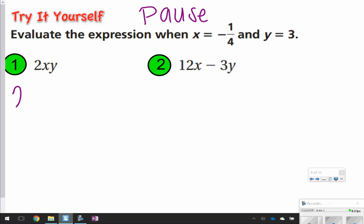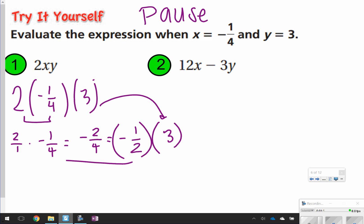We got 2xy, so that's 2 times negative 1 fourth times 3. I'm going to do 2 times negative 1 fourth. That's like saying 2 over 1 times negative 1 over 4. And I'm going to get negative 2 fourths, which is equal to negative 1 half. And then I need to multiply that by 3, which is the same thing as, coming over here, negative 1 half times 3 over 1. Again, multiplying straight across, I get negative 3 halves, which is equal to negative 1 and 1 half.